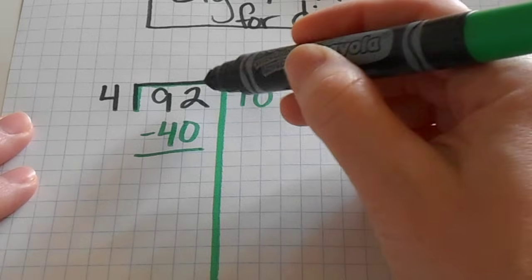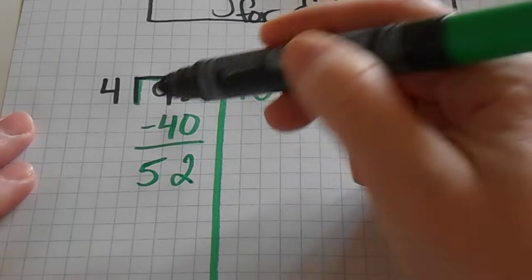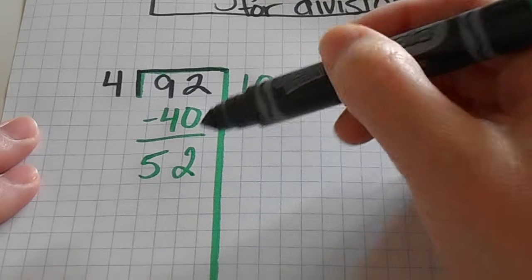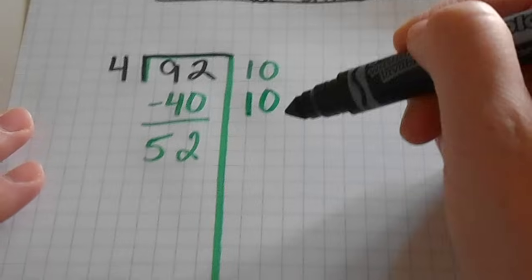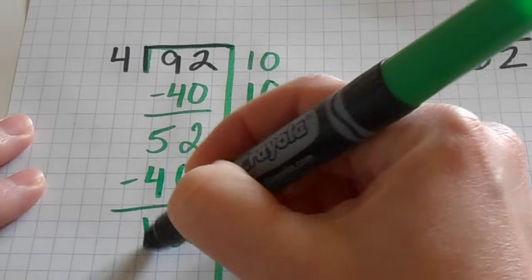So I have 92 minus 40. That leaves me with 52. I can obviously still take out many more fours out of this 52. So again, I'm going to take out another 10 groups of four. And that's going to leave me with 12.